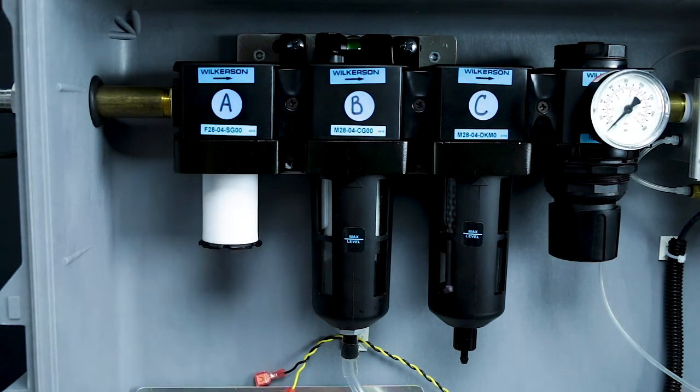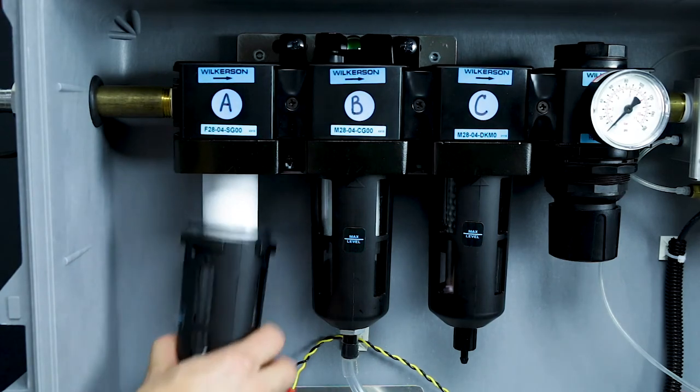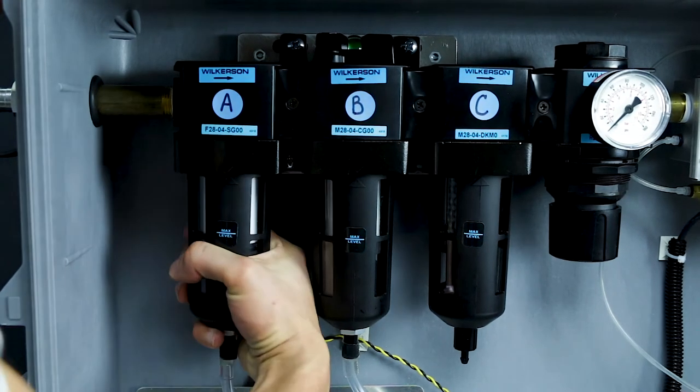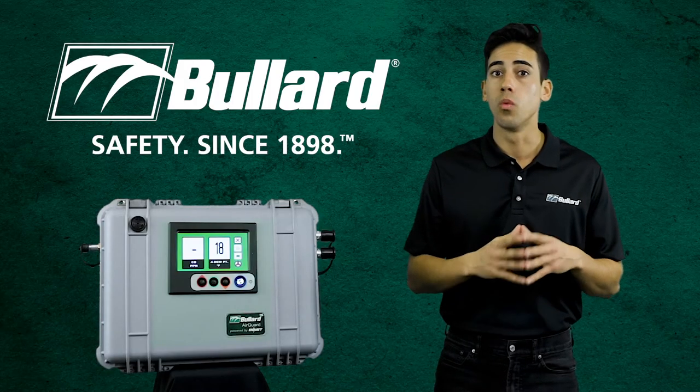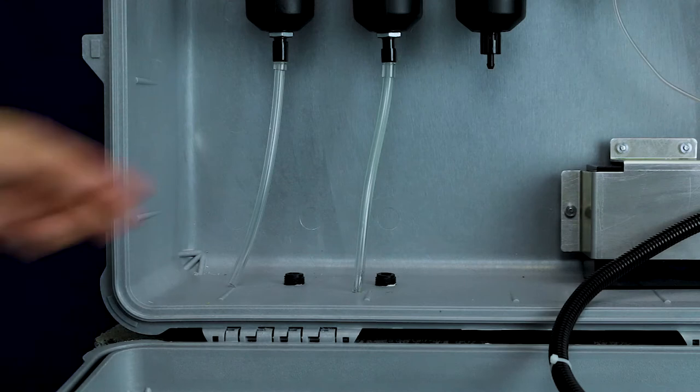Next, reattach the clean filter bowl. Align the bowl, then push up into the housing and twist right until it stops. This will be tight when installed correctly. Reinstall the Tigon tube drain to the left port.